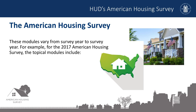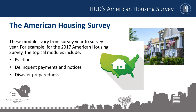For example, for the 2017 American Housing Survey, the topical modules include eviction, delinquent payments and notices, disaster preparedness, and commuting. Summary tables are available on each of these topics.